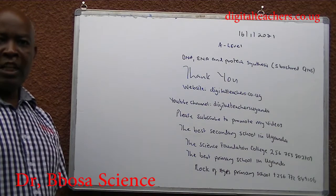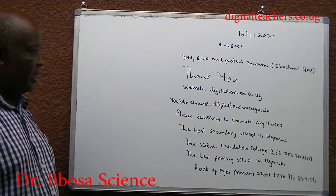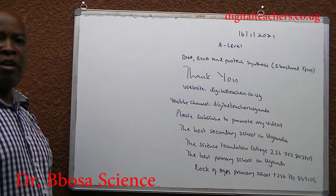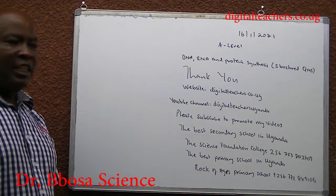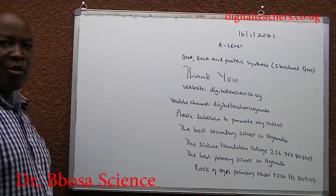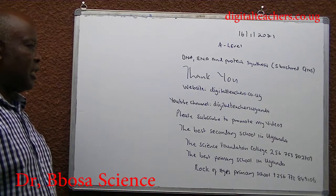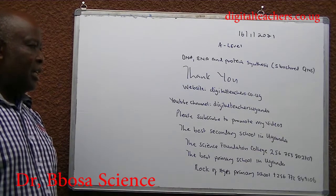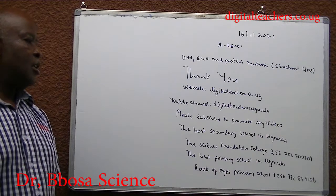Thank you so much for listening to this video. Our website is digitalteachers.co.ug. Here find notes, examples and their marking guides in physics, chemistry, biology, math and primary subjects. Or on YouTube, type in Digital Teachers Uganda. You will be given related videos in physics, chemistry, biology, math and primary subjects. Please subscribe to promote my videos. Subscription is free. The best secondary school in Uganda is the Science Foundation College. The best primary school in Uganda is Locke of Ages Primary School.